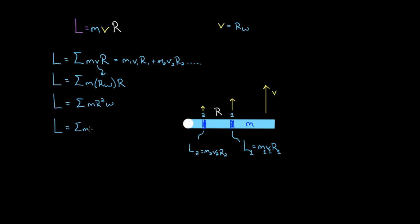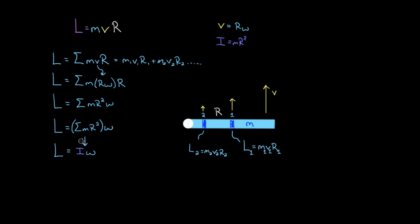Factoring out omega, we get L equals the summation of mr² times omega. You might not be impressed yet — there's still an infinite sum inside. But look at what that sum is: the sum of all the mr² values. Remember that mr² is the moment of inertia of a point mass. If you add up all the mr² values, you get the moment of inertia of the entire object. So we found that angular momentum equals I times omega — moment of inertia times angular speed.